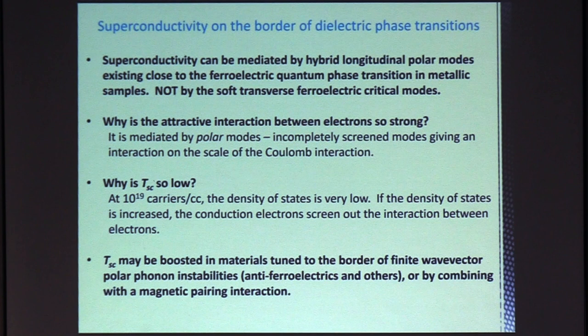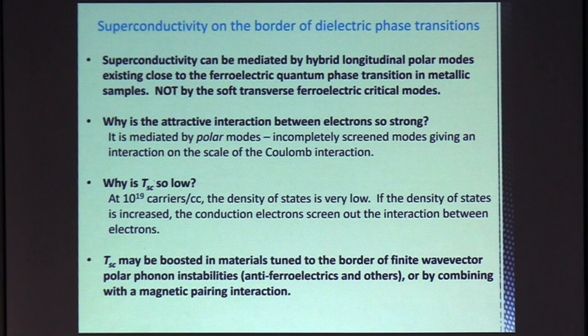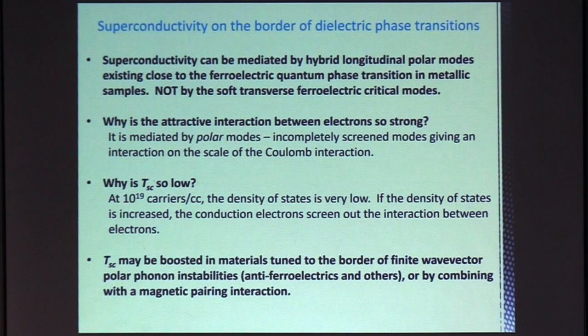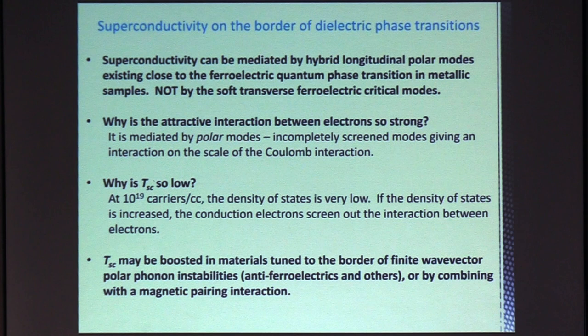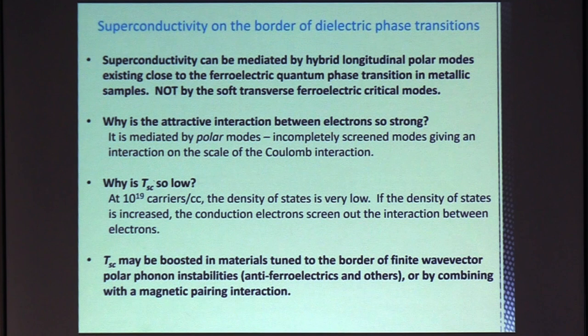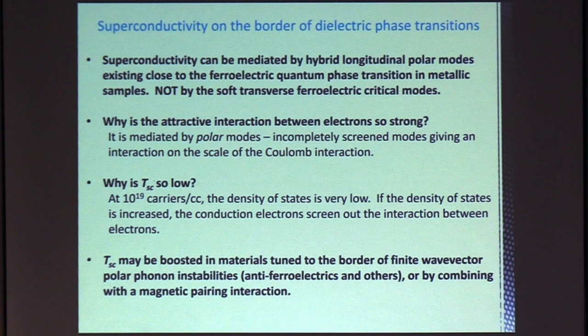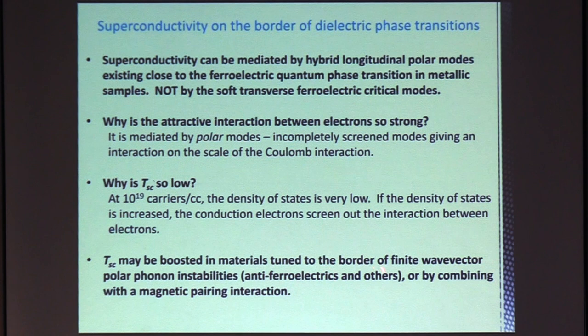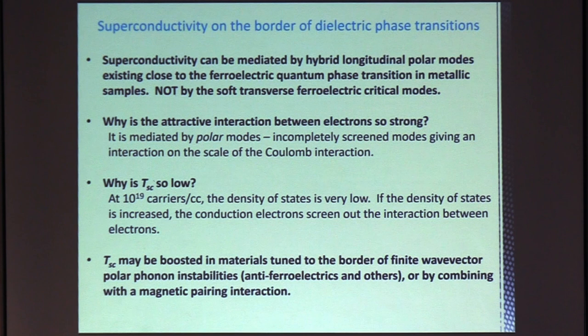So superconductivity can be mediated by these hybrid longitudinal polar modes, which exist close to the ferroelectric quantum phase transition in electron-doped samples. But superconductivity is not mediated by the soft transverse ferroelectric critical mode. So it seems to be enhanced by going to the quantum critical point, but it's not actually pairing arising out of the critical modes. The attractive interaction is very strong in this system because essentially it's mediated by polar modes, incompletely screened modes, which gives an interaction on the scale of the Coulomb energy. TC is so low because with such a low carrier density, the density of states is very low in this material. So as you increase the carrier density, the conduction electrons screen out the interaction, which is producing pairing.